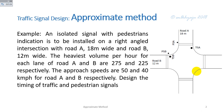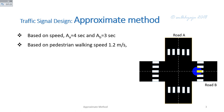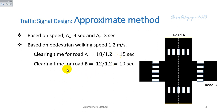Design the timing of both traffic and pedestrian signals. Based on speed, the amber time for Road A is taken as 4 seconds and for Road B as 3 seconds. Based on a pedestrian walking speed of 1.2 meters per second, the clearing time for Road A equals 18 divided by 1.2, which is 15 seconds. The clearing time for Road B equals 12 divided by 1.2.